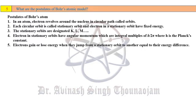What are the postulates of Bohr's atomic model? According to Bohr, in an atom, the electron revolves around the nucleus in circular paths called orbits. Only certain orbits are allowed, called stationary orbits; electrons in stationary orbits do not lose energy and have fixed energy. Stationary orbits are designated as K, L, M, N, and so on. Electrons in stationary orbits have angular momentum that are integral multiples of h/2π, where h is Planck's constant. Electrons gain or lose energy when they jump from one stationary orbit to another, and the energy lost or gained equals the energy difference between the two orbits.